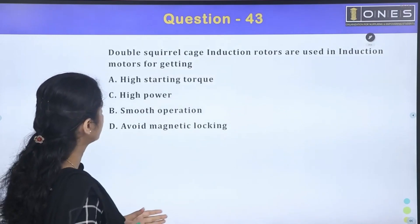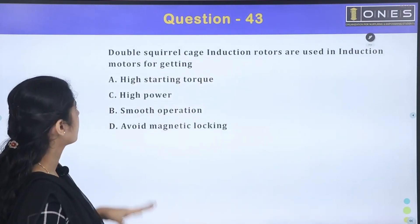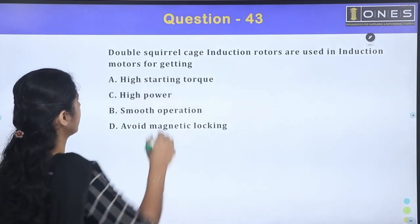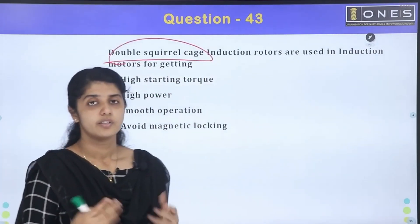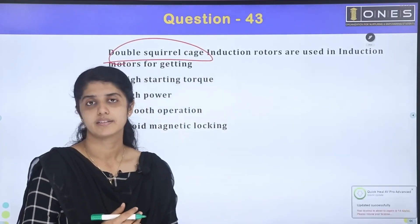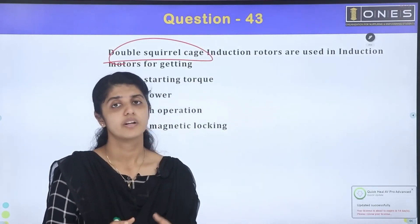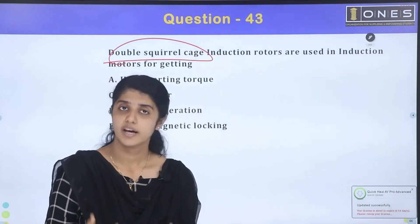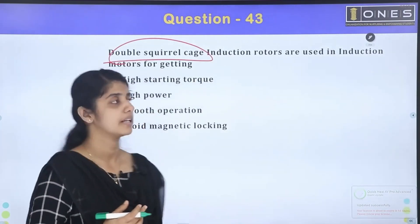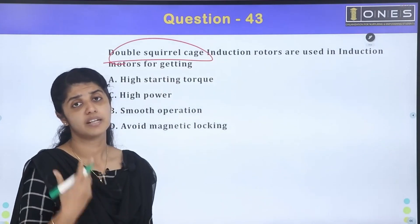Next question: Double squirrel cage induction rotors are used in induction motors for getting... Double squirrel cage. Squirrel cage induction motor is used in induction machine. In the induction machine, the squirrel cage is slipped. The starting torque is used in induction machine. Double cage winding.